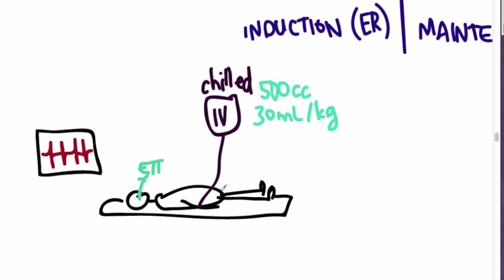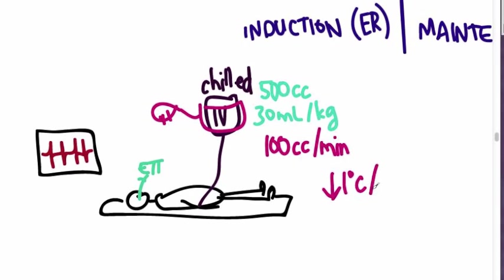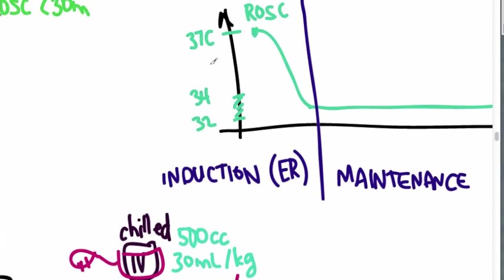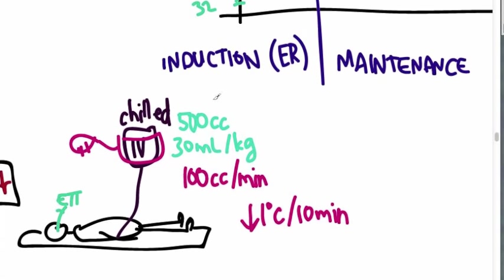Now remember we said we want to give it fast. So if you just let it drip in it's going to go in but not as fast as you want. So maybe we should put a pressure bag over this thing. And so a pressure bag is basically like a blood pressure cuff that goes around an IV bag and can get that fluid in fast. Because if you can get it in at 100 cc per minute via the pressure bag, then you can consistently drop the temperature about 1 degree Celsius per 10 minutes. And if you'll remember we wanted to go from 37 to about 34, so that's 1, 2, 3. So it's going to take us about 30 to 50 minutes to get there.